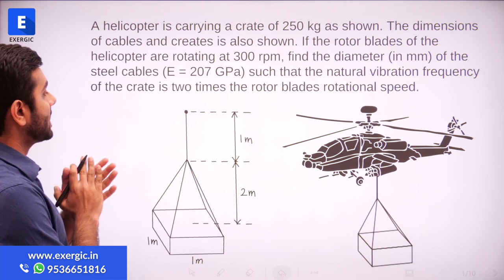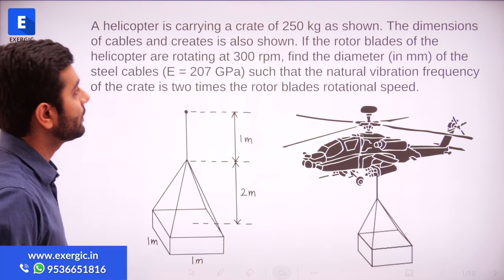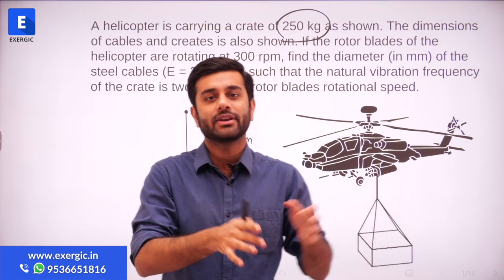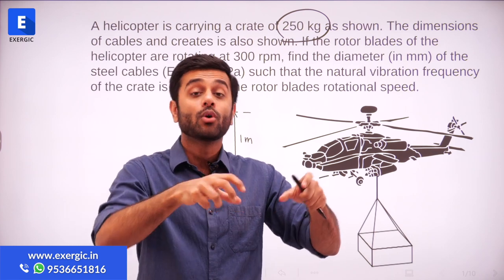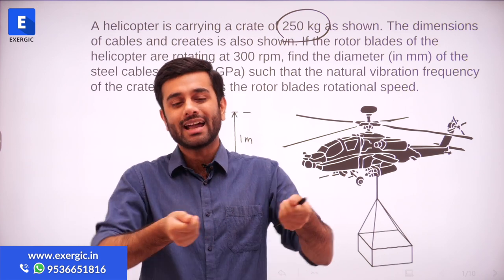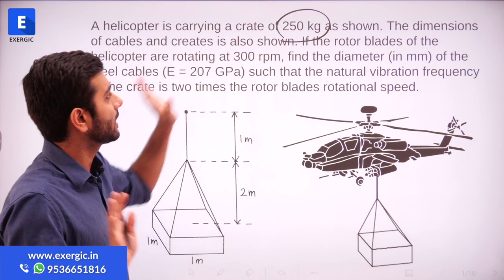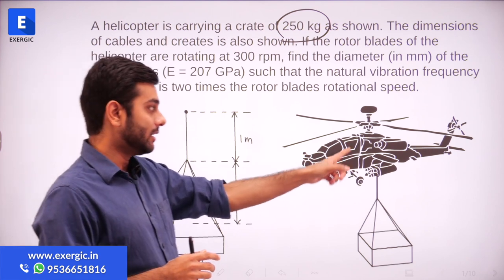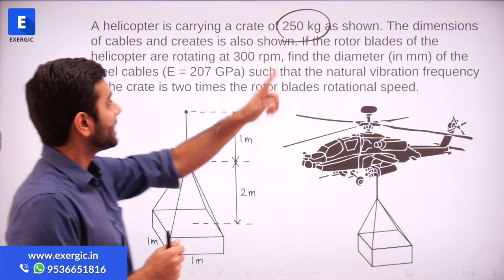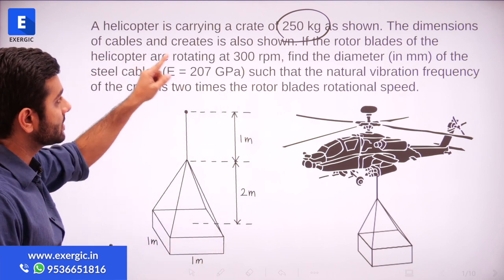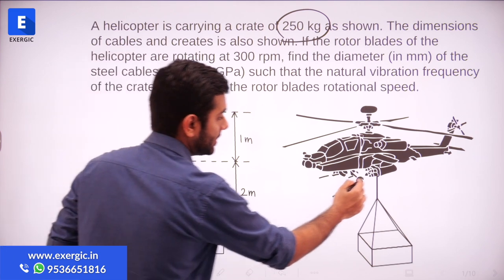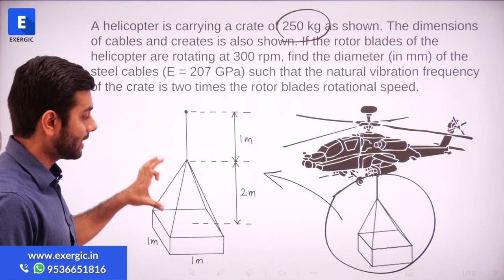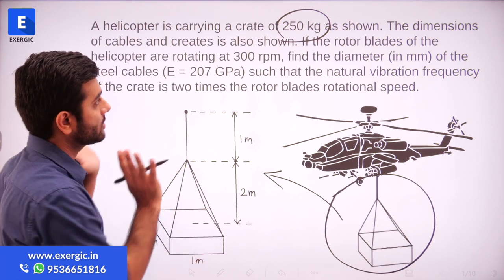The question says that a helicopter is carrying a crate of 250 kg as shown. A crate is any container in which something can be kept — just like a crate of cold drinks or a crate of eggs. So a crate of 250 kg is hanging on a helicopter, and the dimensions of the cables and crate are also shown here, including how different cables and crates are arranged and their lengths.